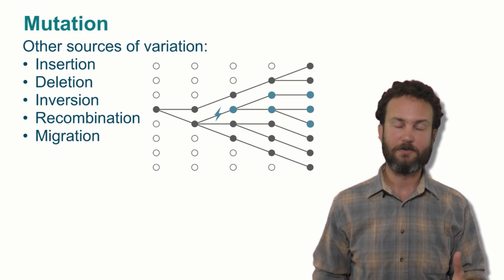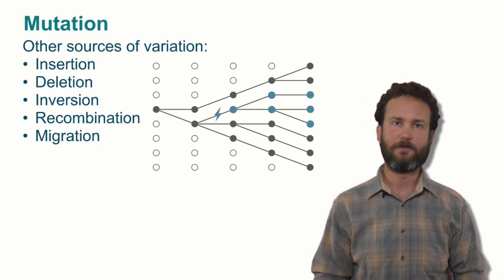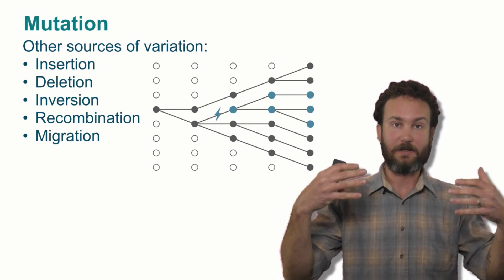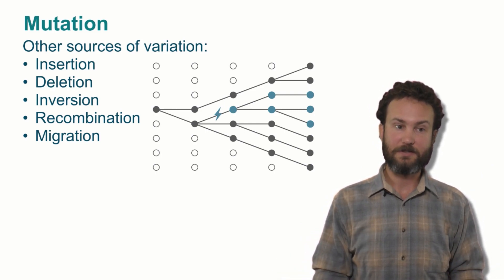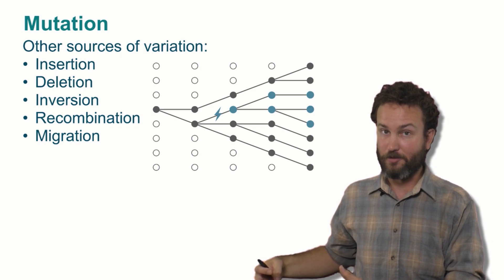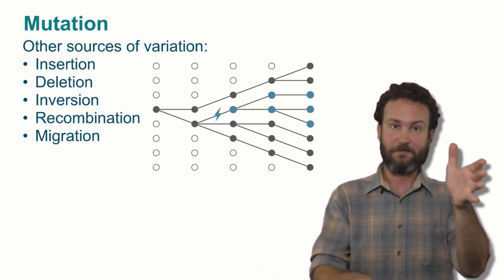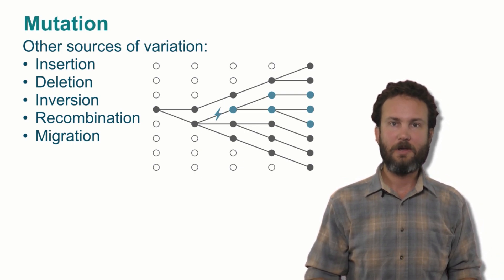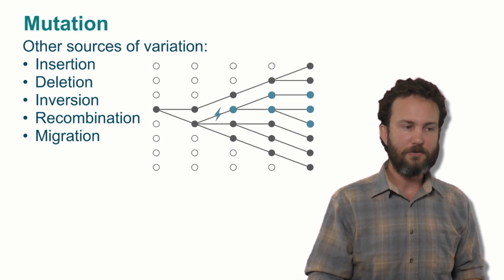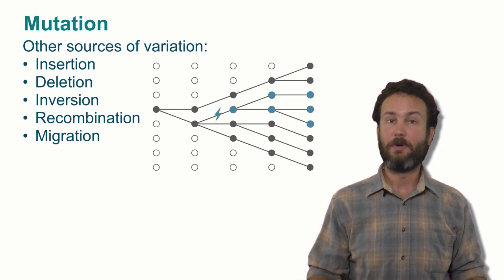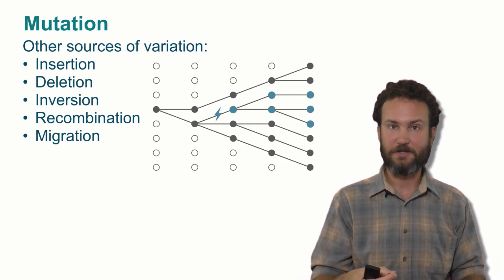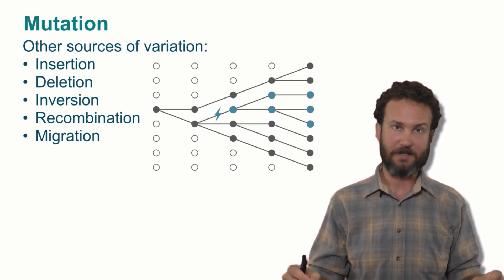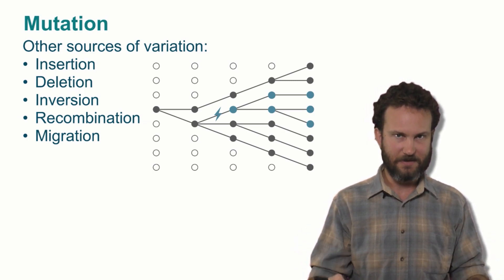Mutation is one of the key sources of variation in populations, but there are other processes, other sources that we won't discuss but are touched upon in the further reading. These include insertions, which is where a whole chunk of the genome is copied and inserted back into the genome; deletions, which is where a chunk of the genome is permanently removed; inversions, where a chunk is inverted and put back in; recombination and migration. All of these provide new genetic variation, but they also in some way depend on the presence of mutations in the first place to provide new variable sequences of DNA. So that's why we focus on mutation as the key process in this video.